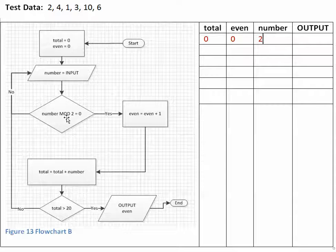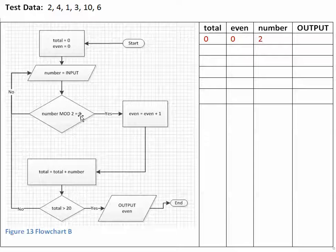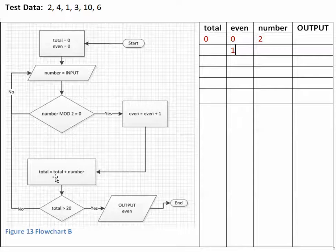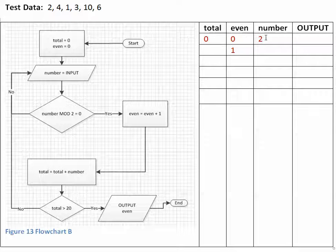Now we move down and we ask the question: is number mod 2 equal to 0? 2 divided by 2 has a remainder of 0, so the answer is yes. We move over and even is assigned the value of even plus 1 — even plus 1 equals 1. We follow the arrow down, and total is assigned the value of total plus number, so we add 2 to 0 and get 2.